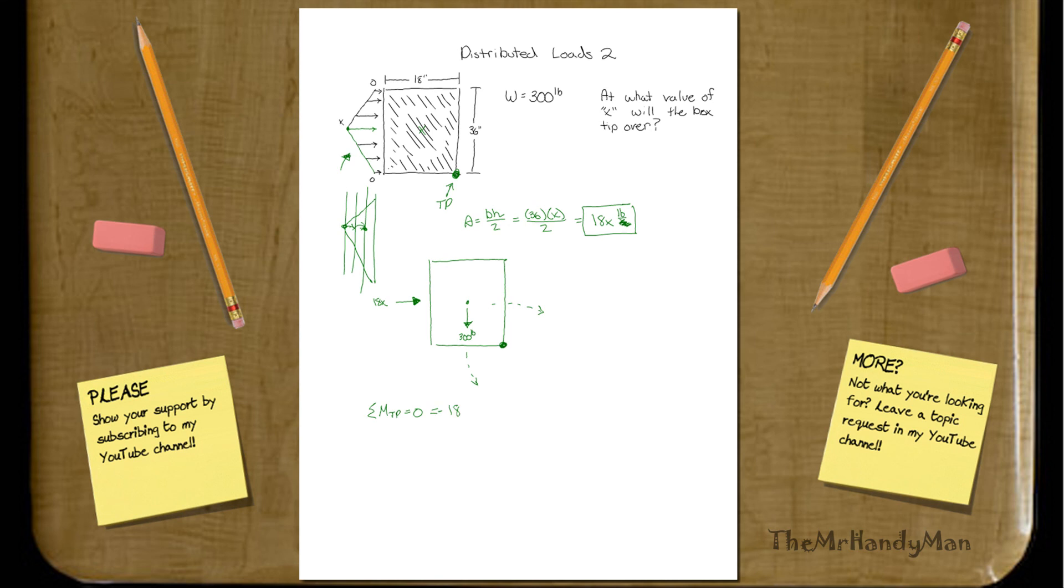Thus, we have 18x times the moment arm, which is half of 36, so half of 36 is 18 inches, which is right here, so times 18, and that's a negative because it's going clockwise, plus our 300 pounds times what would be half of the base of the box, which would be 9 inches only, so times 9. This should equal zero.